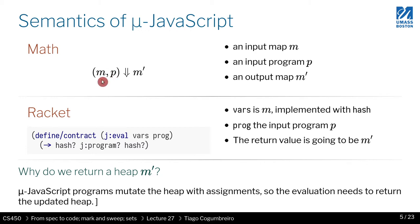Let me introduce you to the semantics of this language, micro-JavaScript. The semantics is given with this evaluation relation, which has two input parameters and one output parameter. The input M — lowercase m — is just the map representing the binder, also known as the environment. P is your program. And M' is the output variables and values.